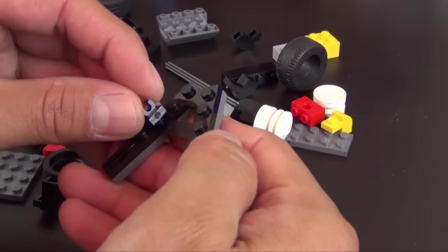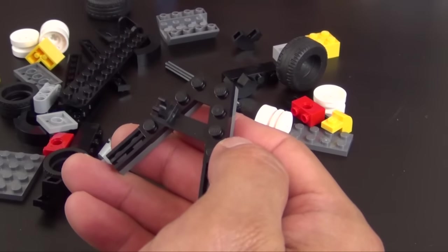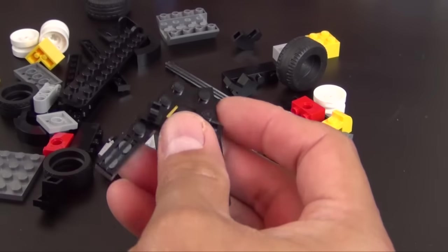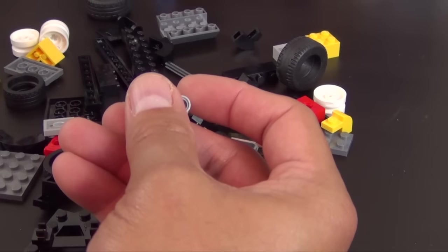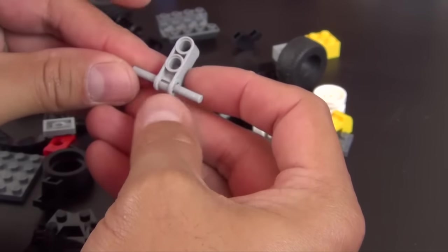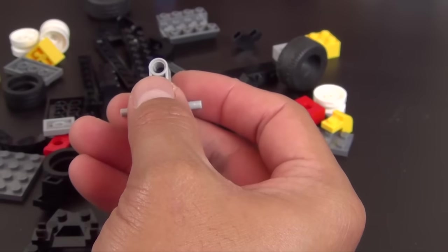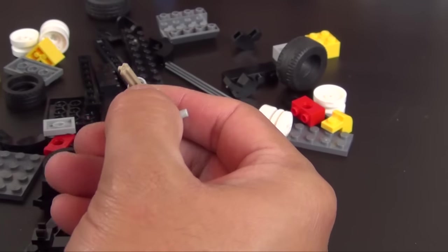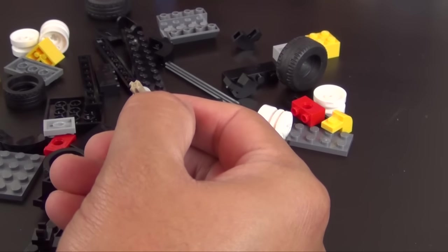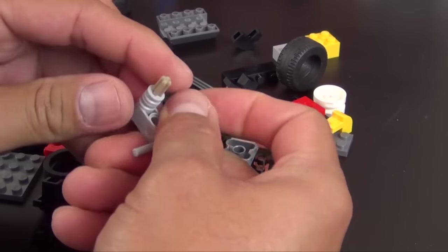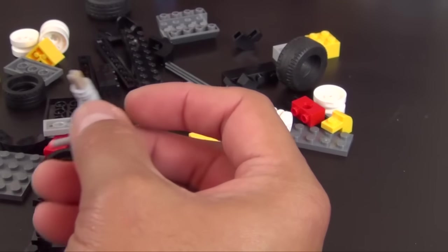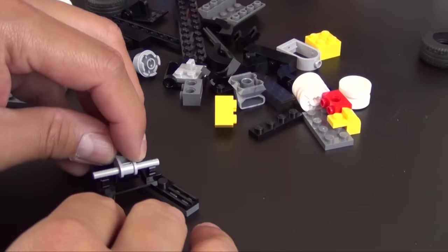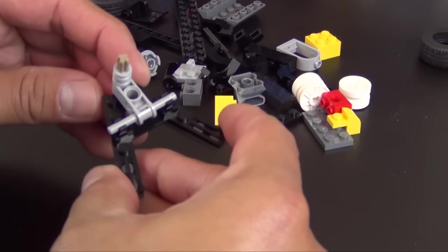All right, so we have a couple one by one plates with clips on the top. We're going to put like that with this technic piece. We're going to slide this bar through, slide it about halfway through. And then we have an axle with a stop on it.